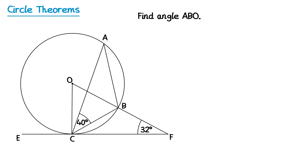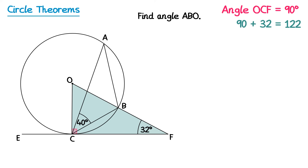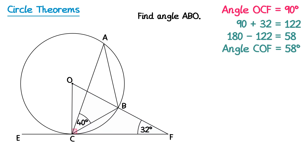To begin this question we're going to look at the line ECF, which is a tangent to the circle, and also the line OC, which is a radius. One of the theorems says a tangent meets a radius at 90 degrees, so we know angle OCF equals 90 degrees. Now looking at triangle OCF, we have two angles: 32 degrees and 90 degrees. Adding them gives 122, and subtracting from 180 gives the missing angle of 58 degrees. So angle COF equals 58 degrees.